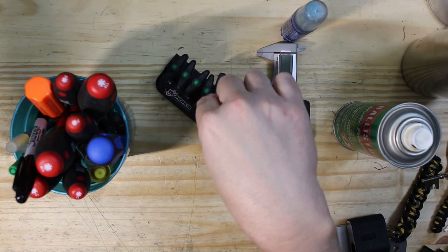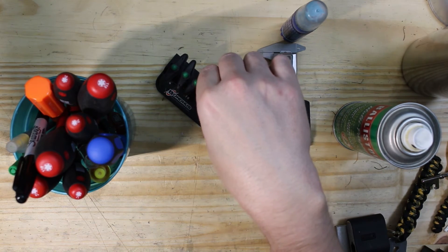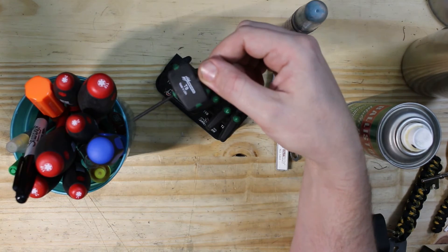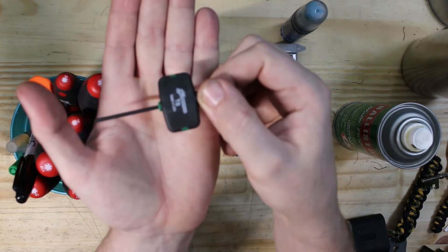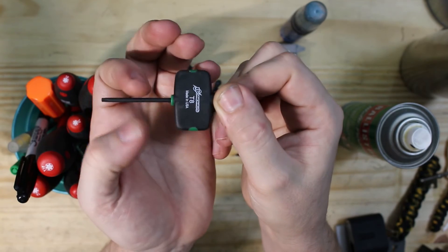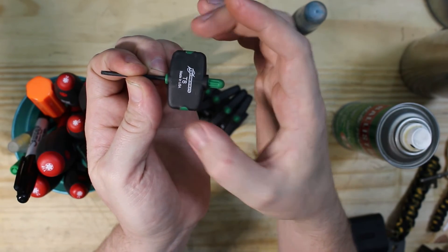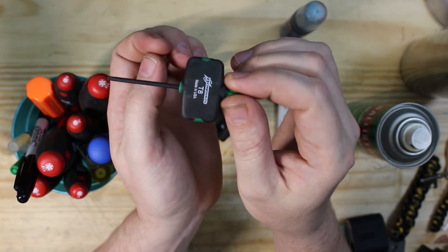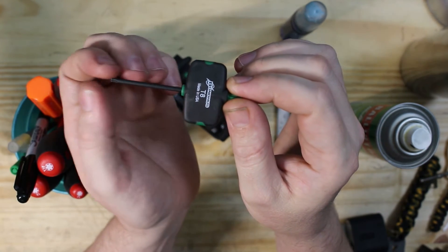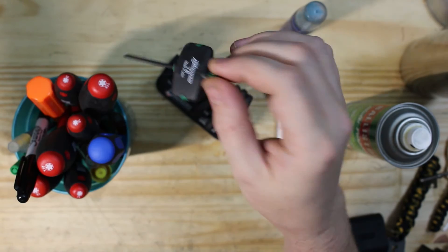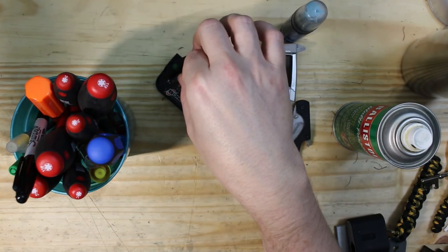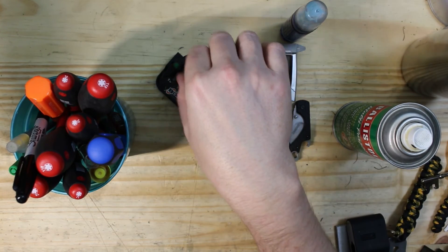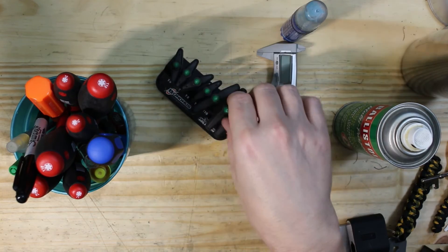I have a set of Bondhus, I think is how you pronounce that, of these little Torx wrenches. These are nice because you've got these two little flats here, and it's a reminder not to use it like a regular screwdriver and strip out your Torx bit. T6 Torx tend to strip on me quite often.